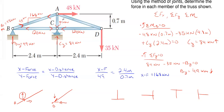Let's fill in the arrow directions for the other ends of those members. For CD, 120 kilonewtons is compressing joint C going to the left, so at the opposite end it's going to the right at joint D — compression. For AC, 84 kilonewtons is compressing joint C going downward, so at the opposite end it has to be going upward at joint A — also compression.